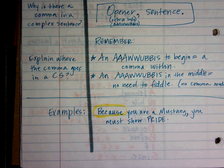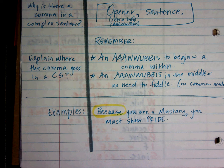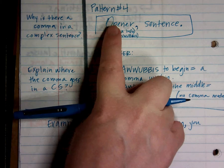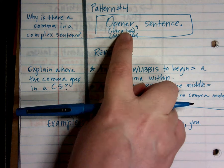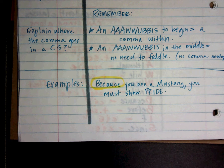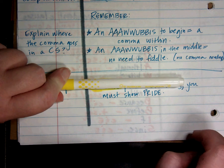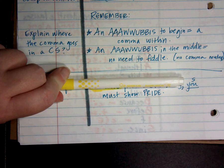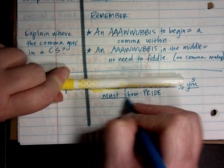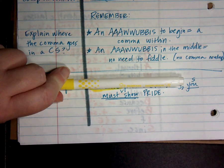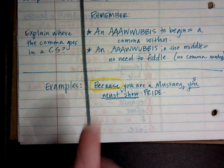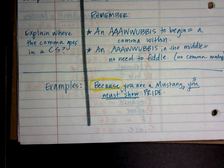Everything after the comma must be a complete sentence. So if I cover it up: 'you must show pride.' What's my subject? You. And what's my verb? Must show. Does it express a complete thought? Yes. What does the extra information do? It clarifies why we're showing pride. Remember, clarify and complete are two different things. We can have a complete sentence and add more to clarify.